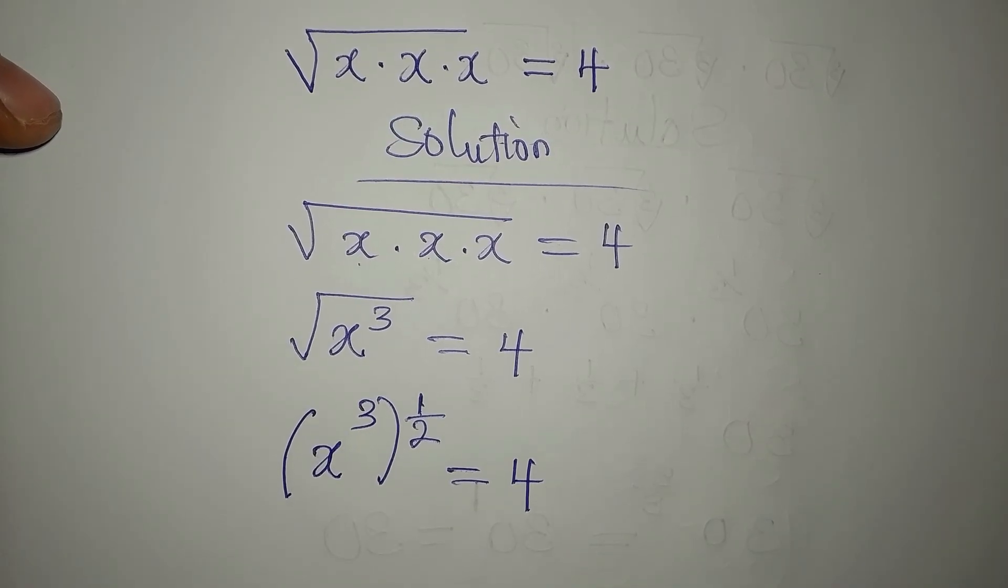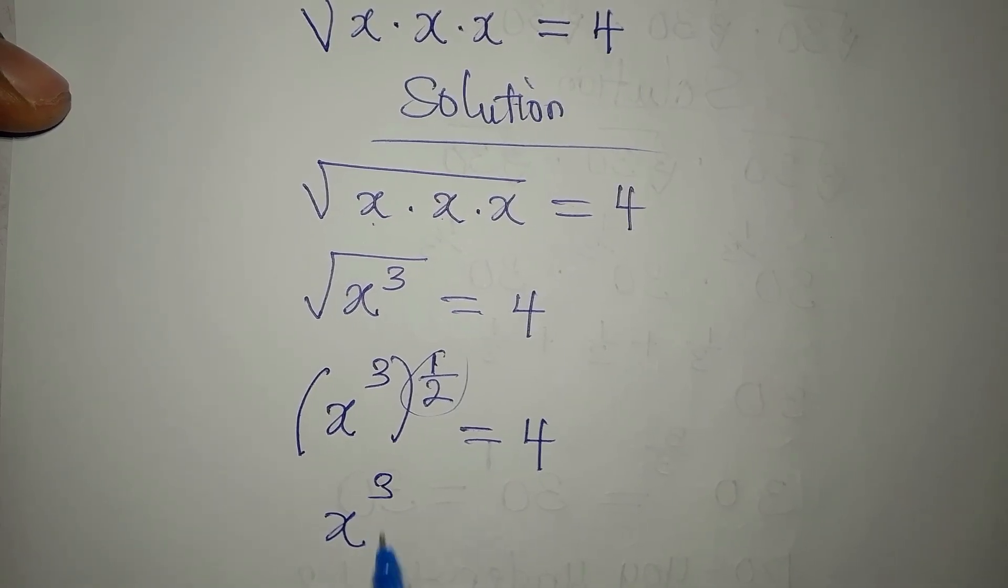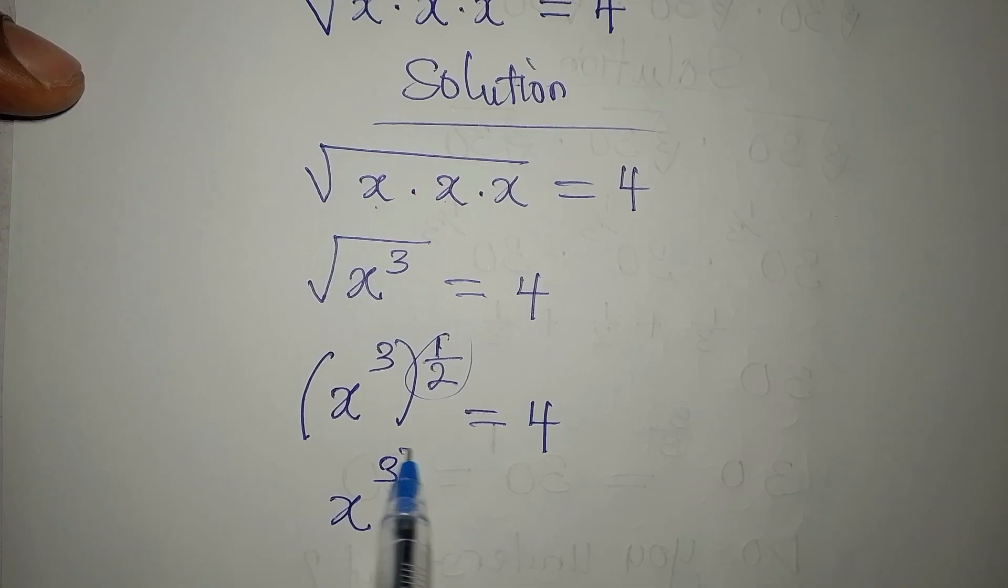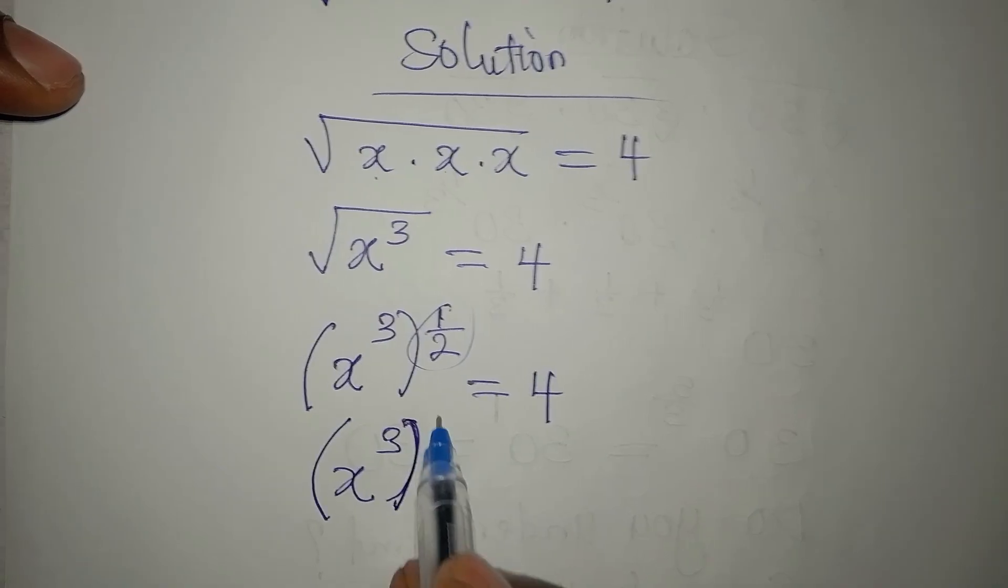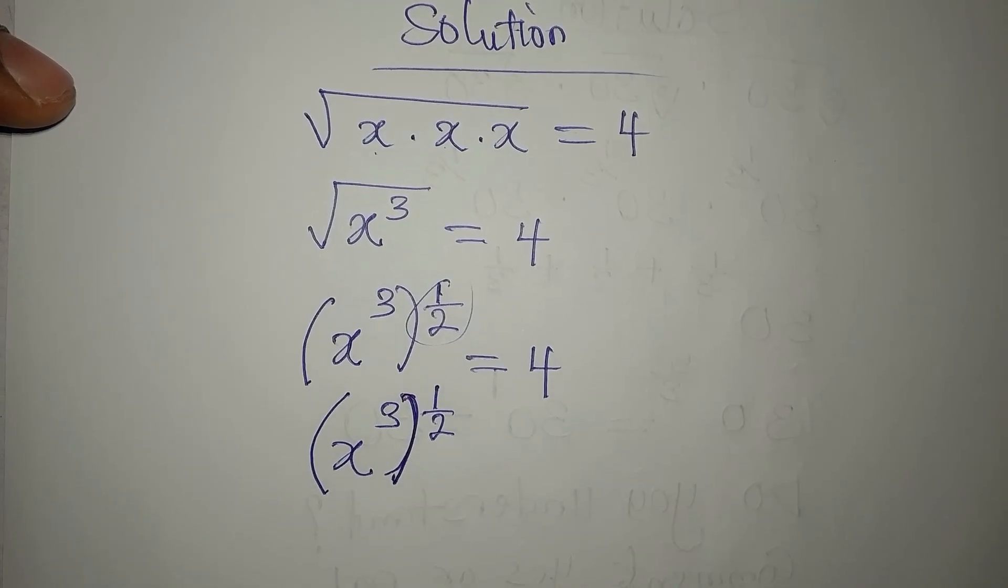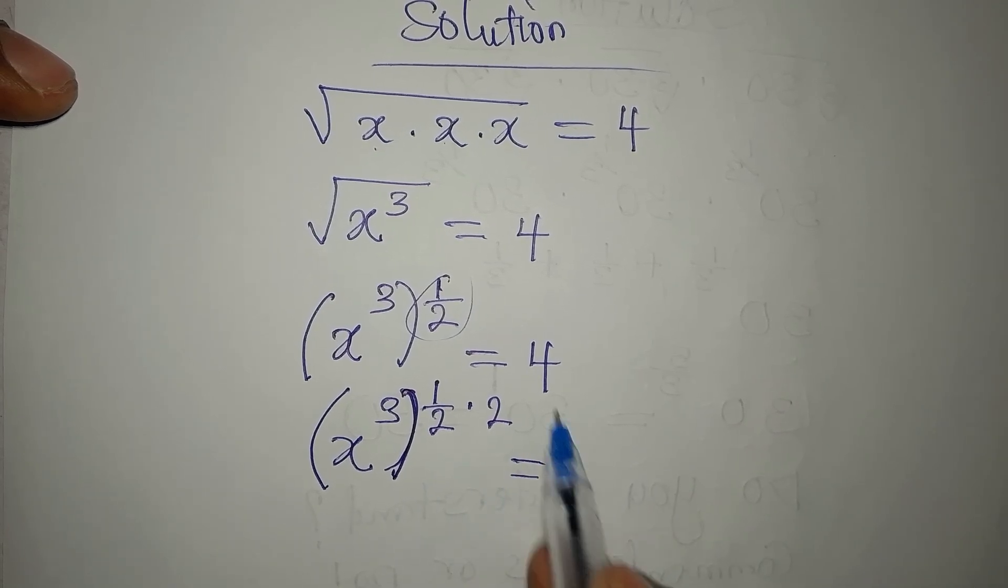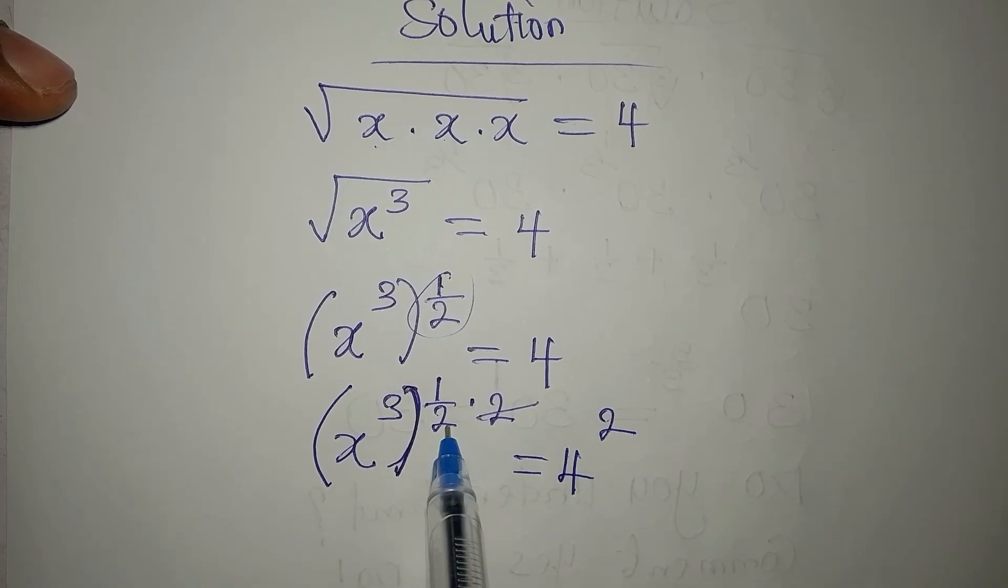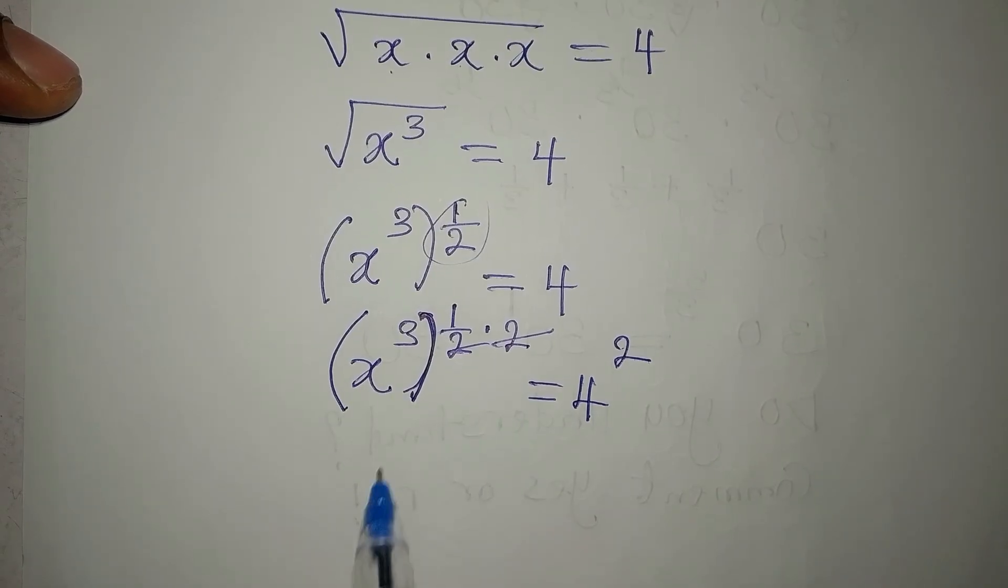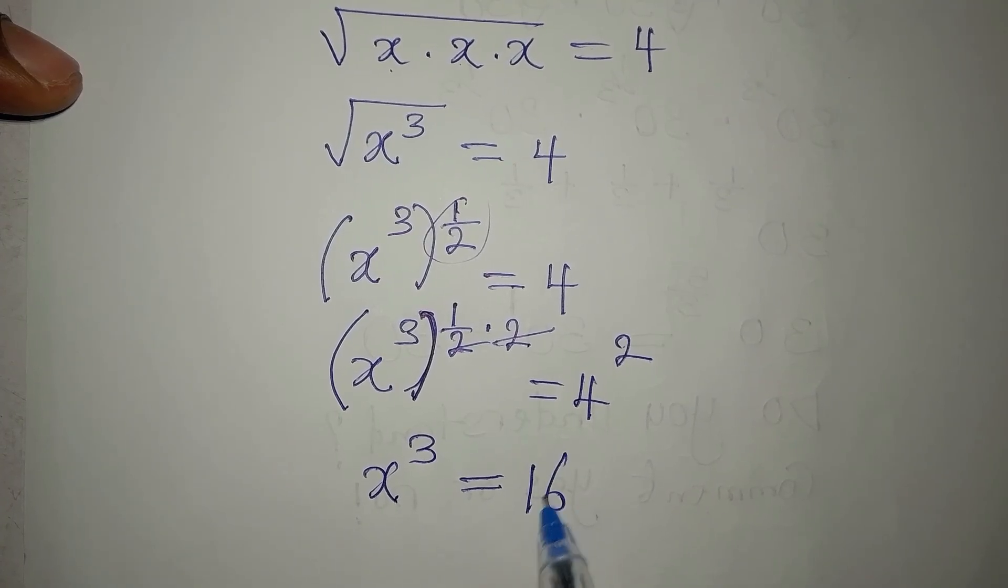Now, we can remove this power, the one on the outside. So we have x to the power of 3 to the power of 1 over 2. I will multiply this power by 2, so on the other hand, I will now have 4 to the power of 2. This will take this out. x to the power of 3 is equal to 4 squared, and that is 16.